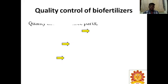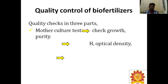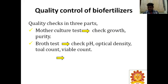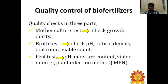Quality control of biofertilizers involves three checks: first, mother culture test — check growth and purity; second, broth test — check pH, optical density, total count, and viable count; third, peat test — check pH, moisture content, viable number, and plant infection method (MPN — most probable number technique).